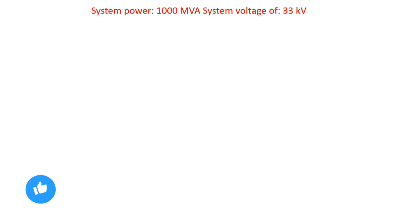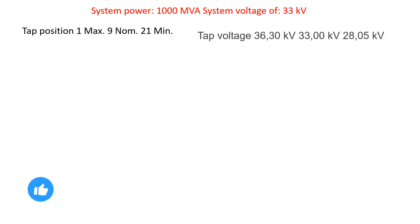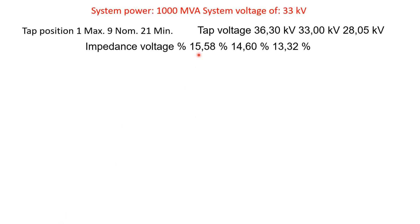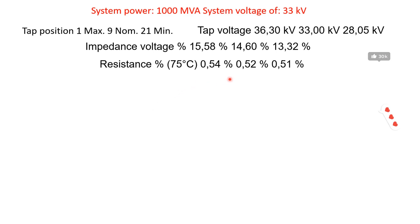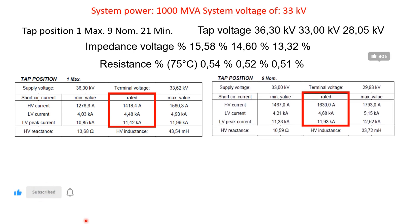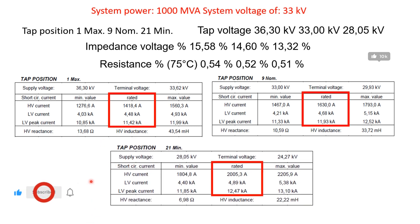Here is an example: system power 1000 MVA, system voltage 33 kV. Tap positions are: tap 1 maximum, tap 9 nominal, tap 21 minimum. Tap voltages are 36, 33, 28.5 kV. Impedance voltage values are 15.58 percent, 14, and 16 percent. Resistance at 75°C: 0.54, 0.5, and 0.56. The table shows all information based on each tap position, including top-changing position data, all based on the 33 kV, 1000 MVA rating.